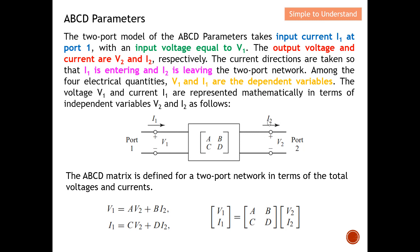The current directions are taken so that I1 is entering and I2 is leaving the two-port network. From here you can see that I1 is actually entering the two-port network, while I2 is actually leaving the two-port network.